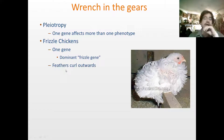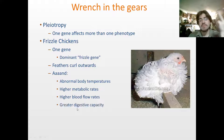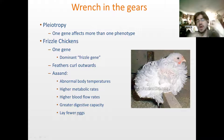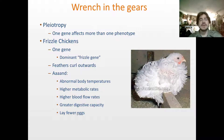The feathers curl outwards on the frizzle chicken, but at the same time it has abnormal body temperatures, higher metabolic rates, higher blood flow rates, greater digestive capacity, and it lays fewer eggs. These are all separate phenotypes altered by the single dominant frizzle gene. That is pleiotropy — one single gene affects a large number of phenotypes.